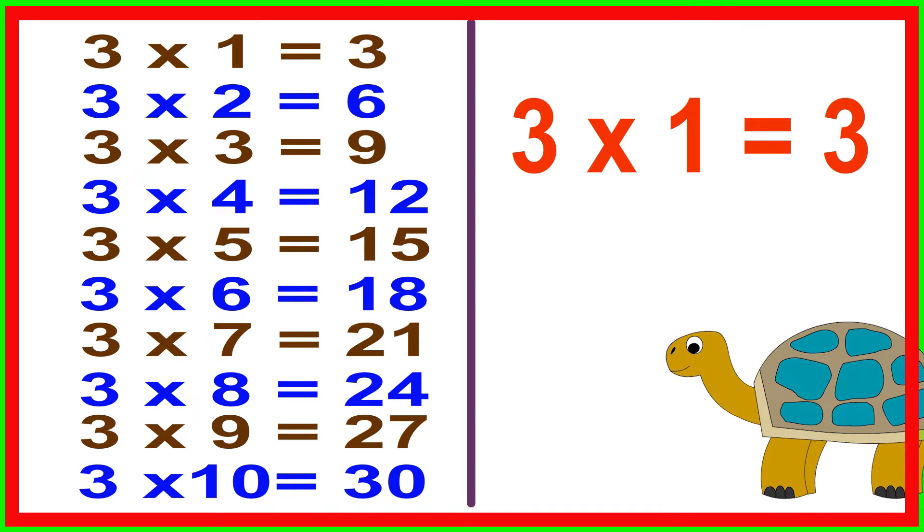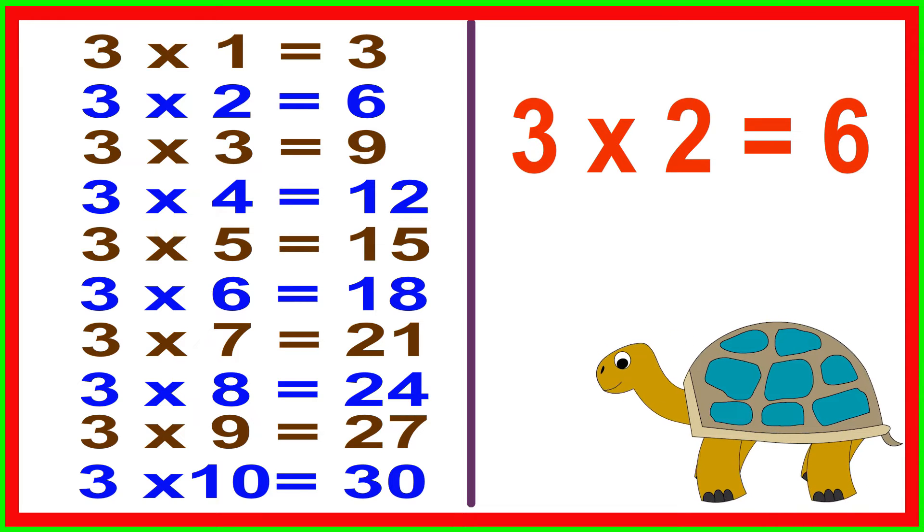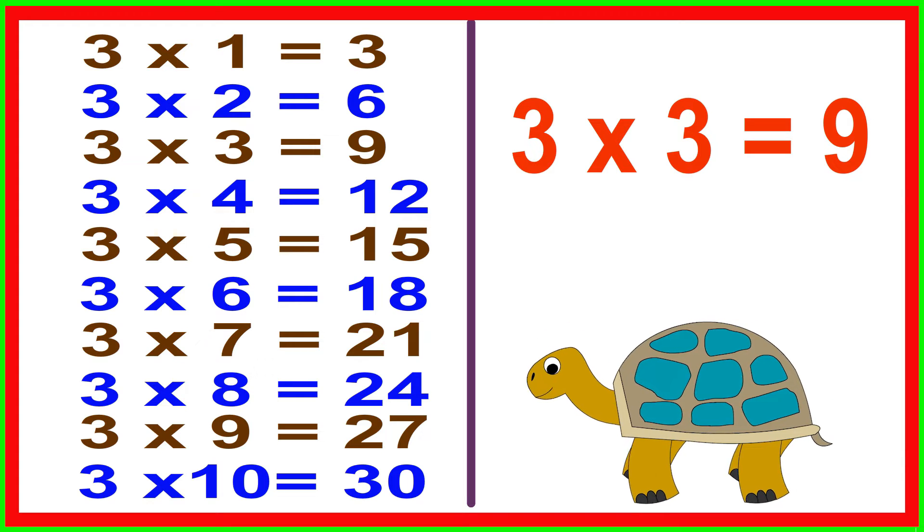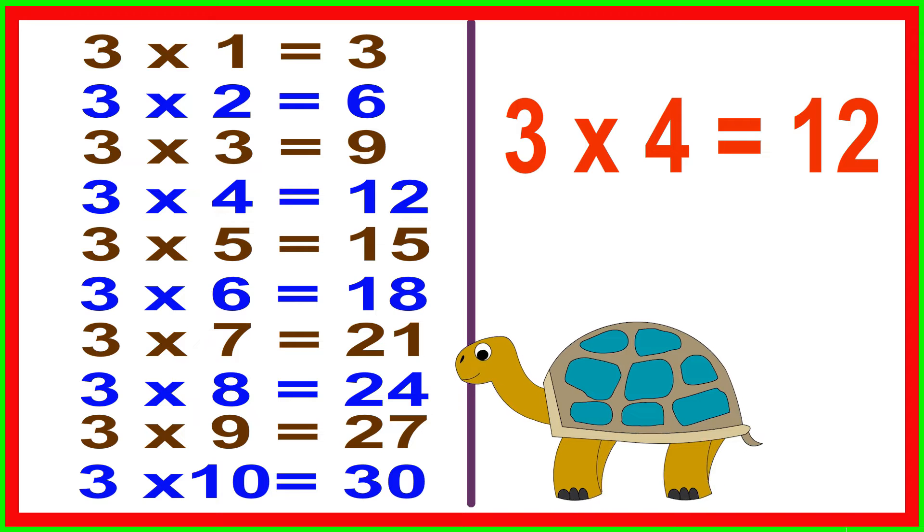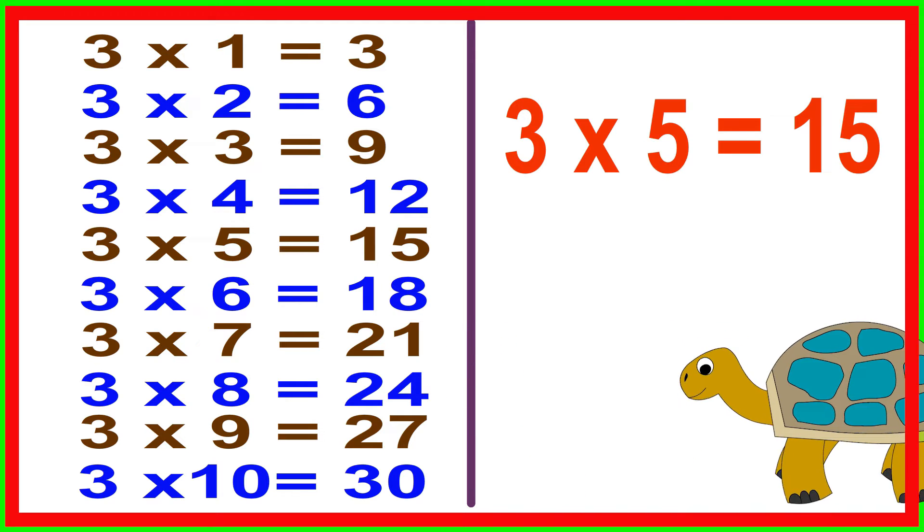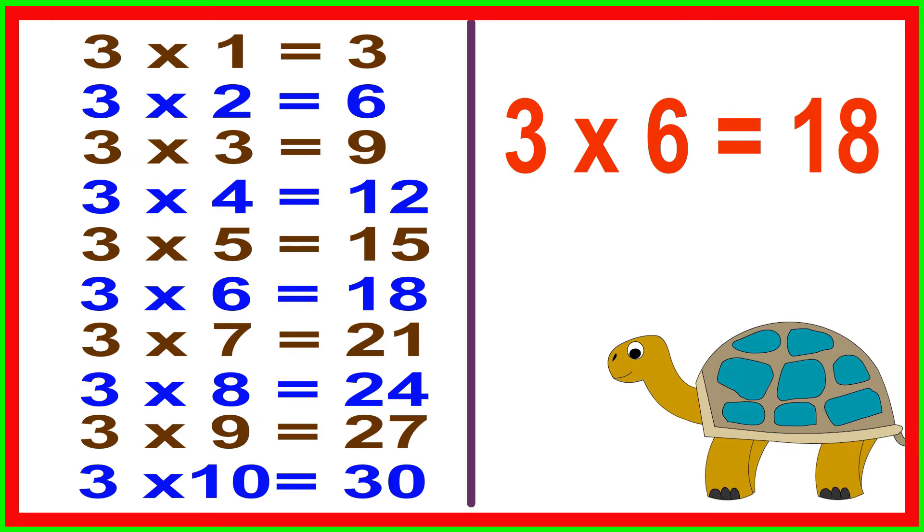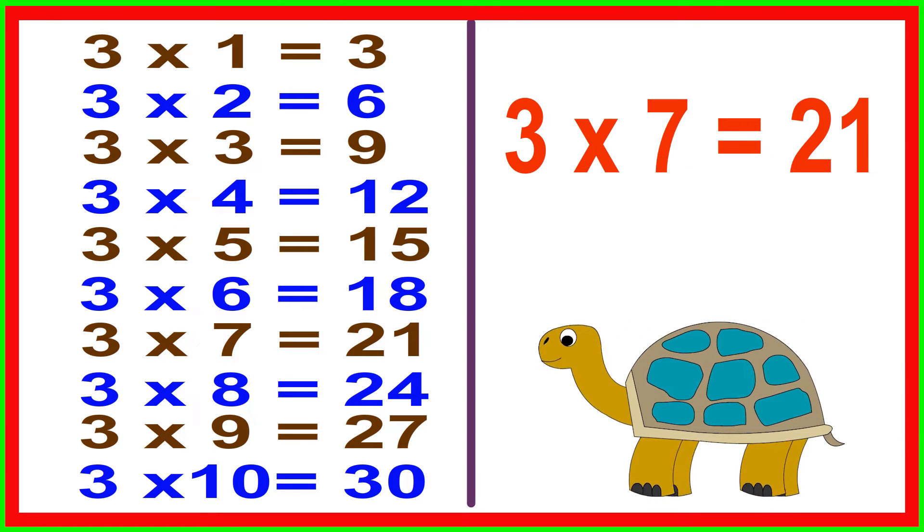3 times 1 equals 3, 3 times 2 equals 6, 3 times 3 equals 9, 3 times 4 equals 12, 3 times 5 equals 15, 3 times 6 equals 18, 3 times 7 equals 21.